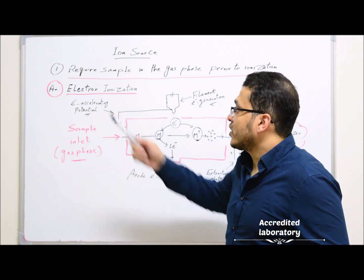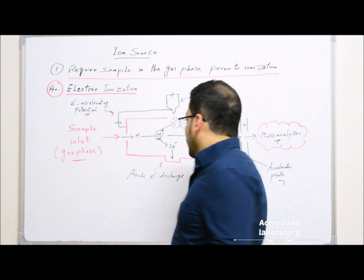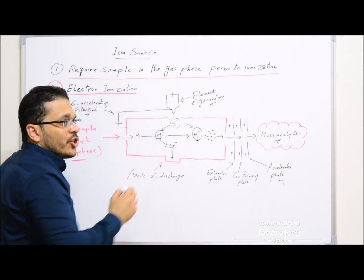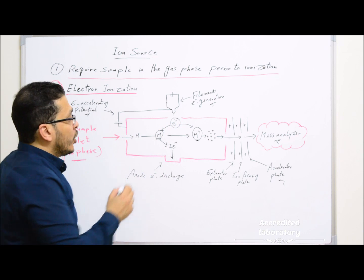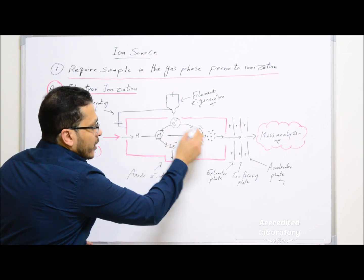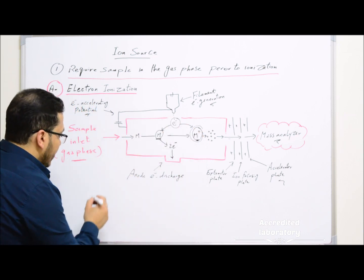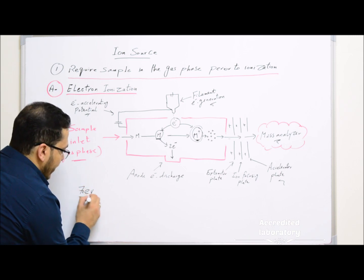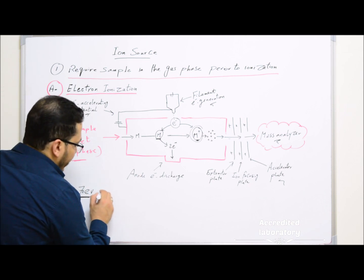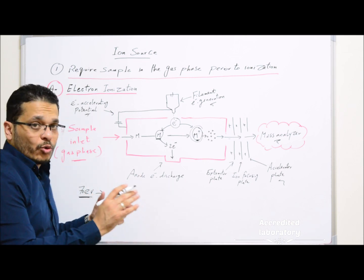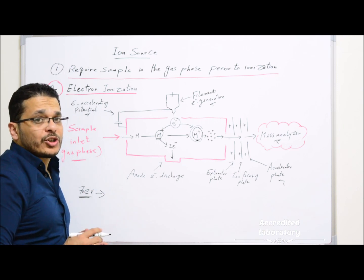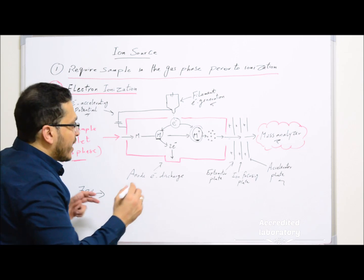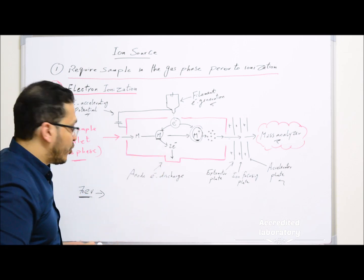The first is electron ionization. As we see in this picture, there is interaction between gas-phase sample molecules and electrons generated from the filament or electron generator to form a molecular ion. The energy of electrons is about 70 electron volts — sufficient energy to overcome the ionization potential of most organic compounds to form a molecular ion which has the same molecular mass as the molecule and is a positively charged ion.